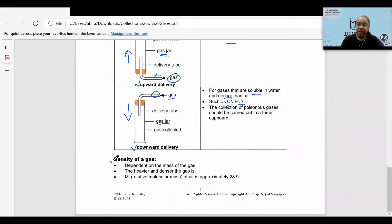Density of a gas. You need to know that the density of a gas is dependent on the mass of gas. For example, the heavier the mass, the denser it is. And the MR, which is also known as your molecular mass of air, is approximately 28.9. And that is two minutes of chemistry. See you next time.